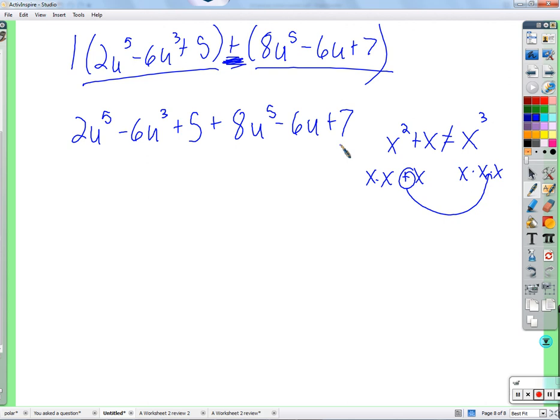And now we can collect like terms. We have two u to the fifth, eight u to the fifth. It's ten u to the fifth. Add to the third and that's it. U minus six u. Five and seven. That'll be twelve. Other questions. Sorry for dropping your class.